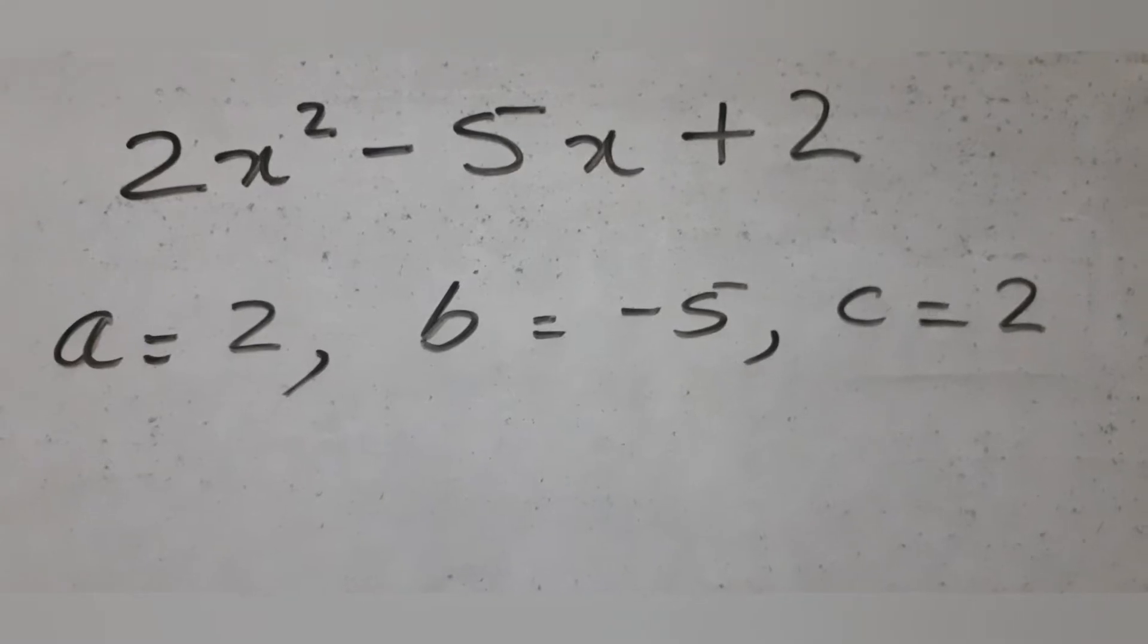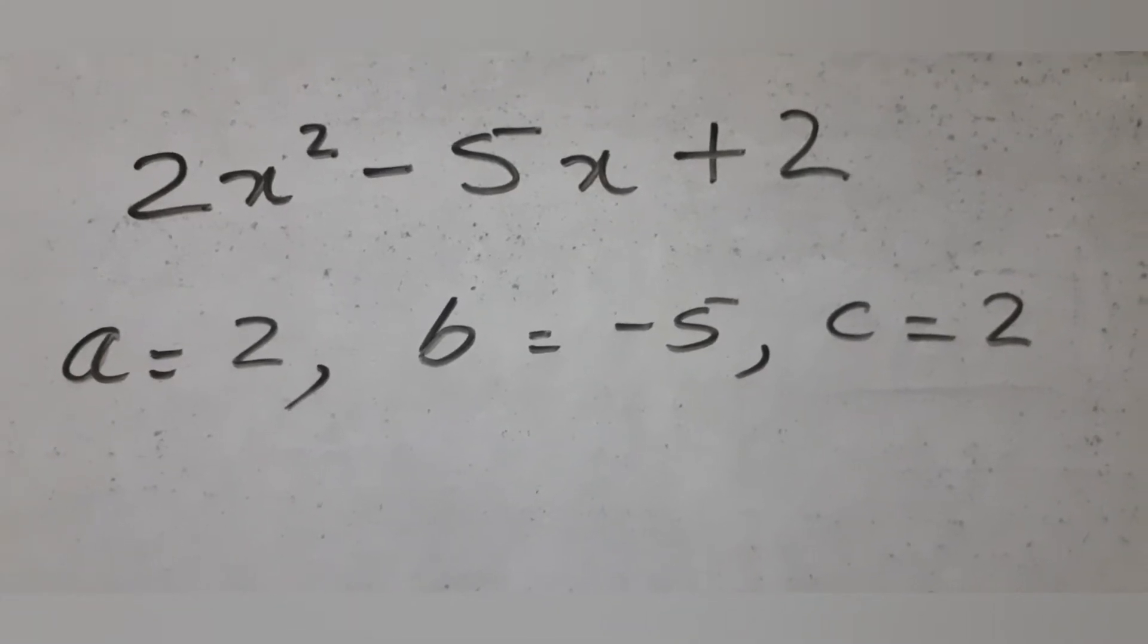Use ax squared plus bx plus c to get a equal to 2, b equal to minus 5, c equal to 2.